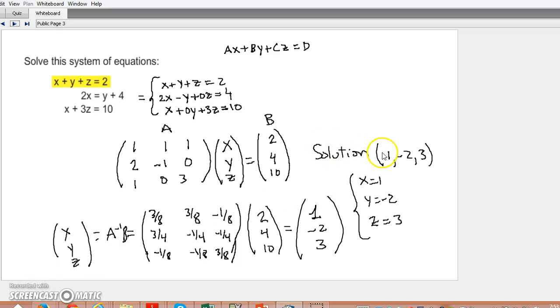So how do I get the solution 1, negative 2, 3 from this system of equations?